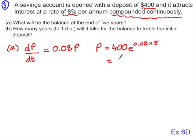Because it's money, we round to two decimal places, $596.73.